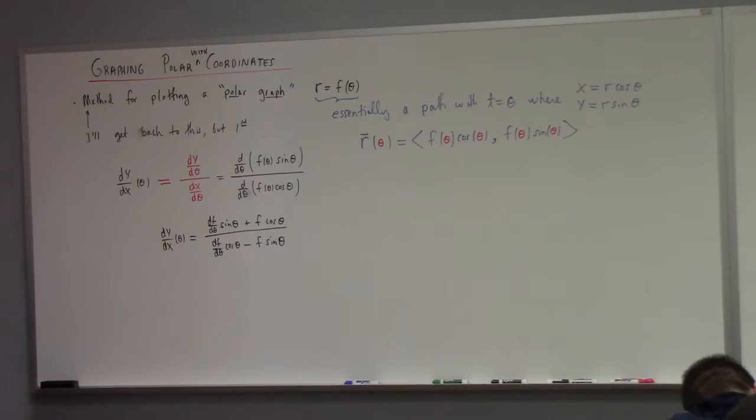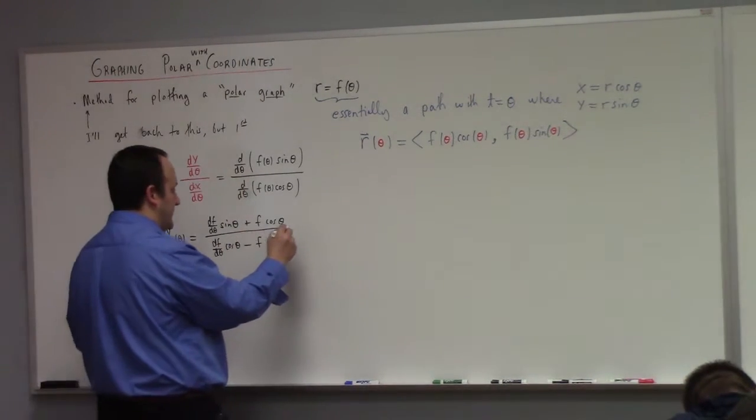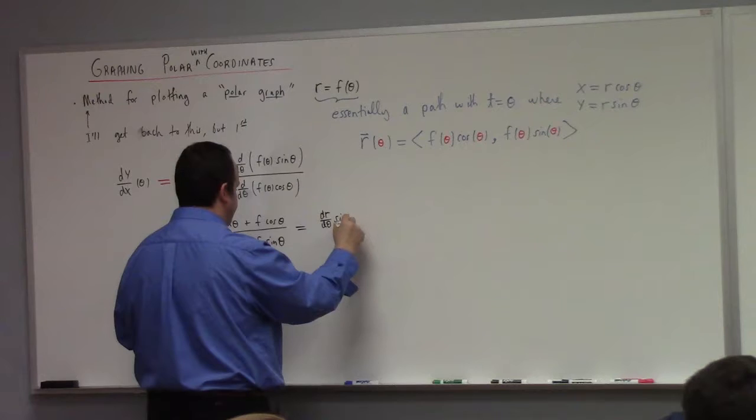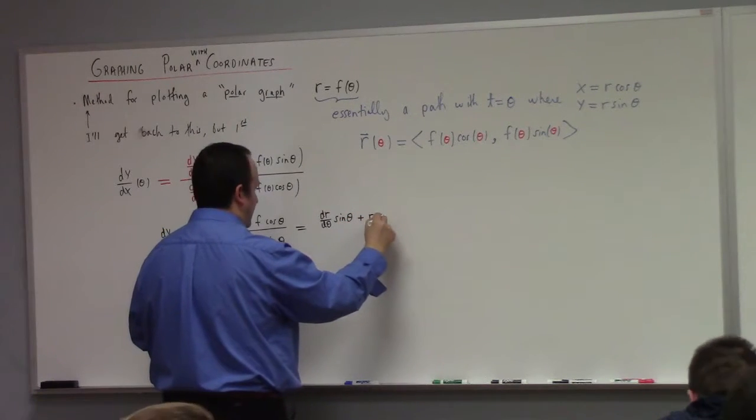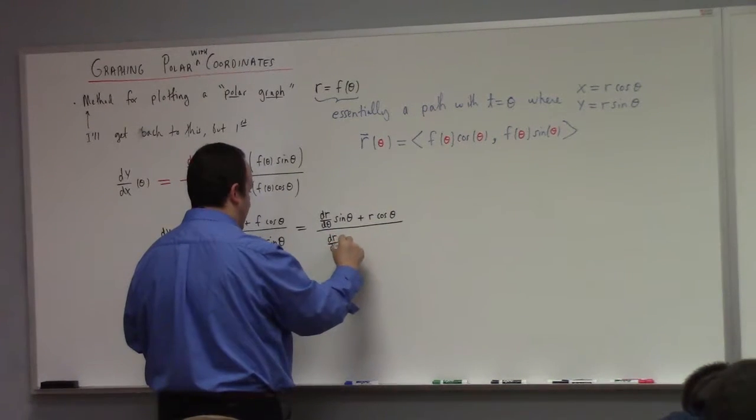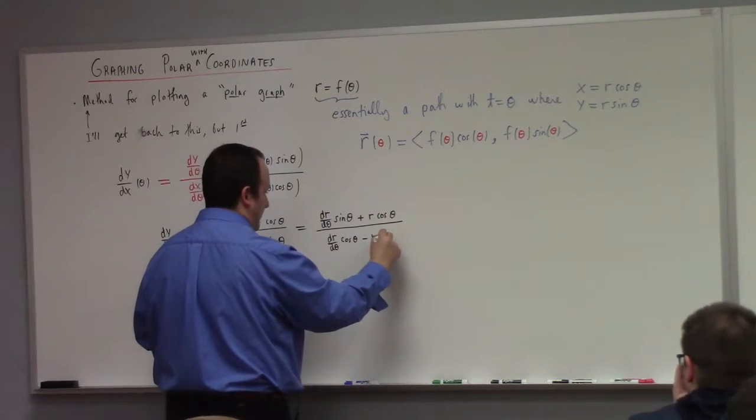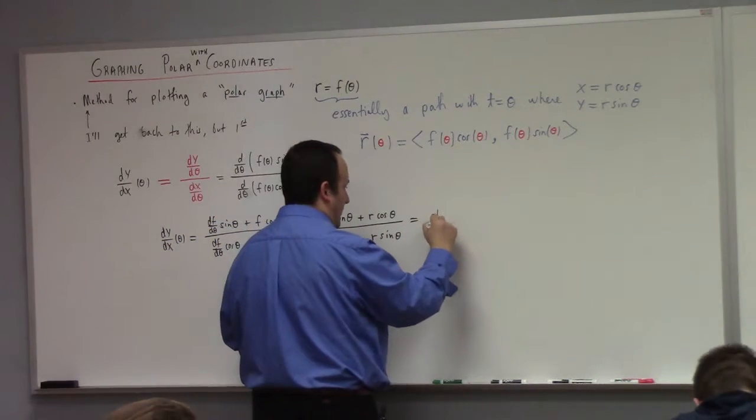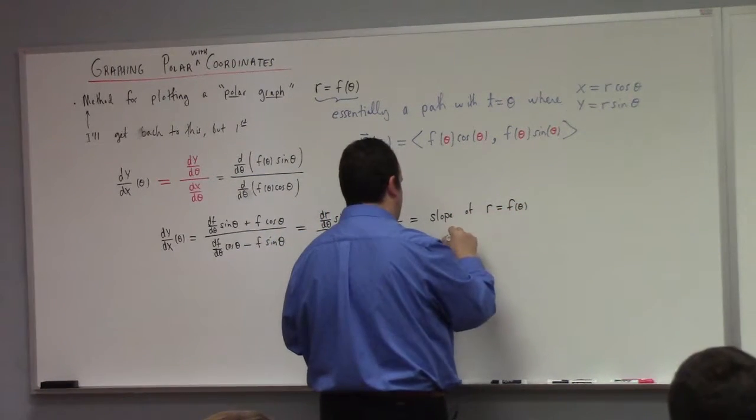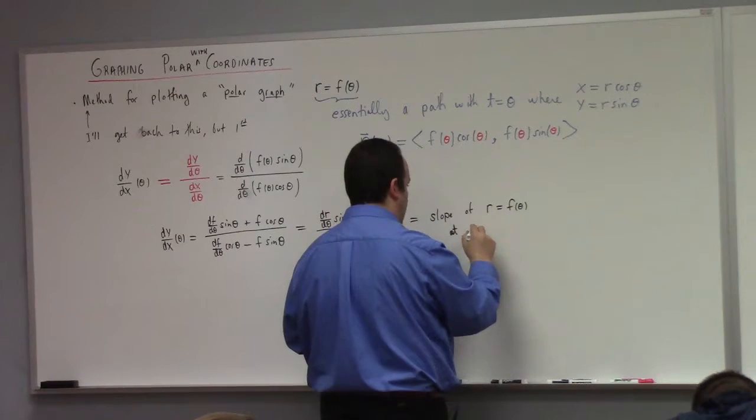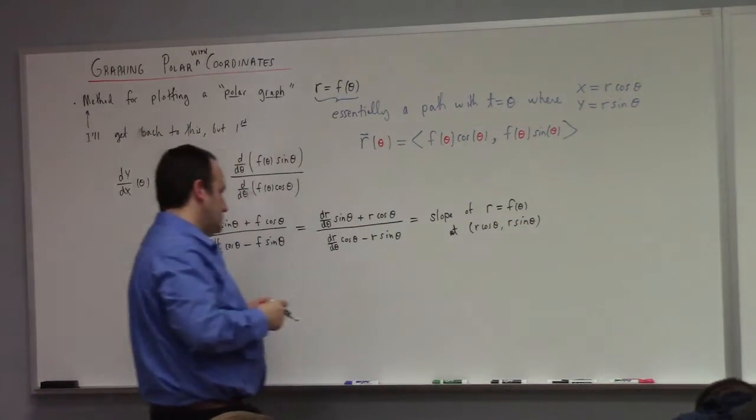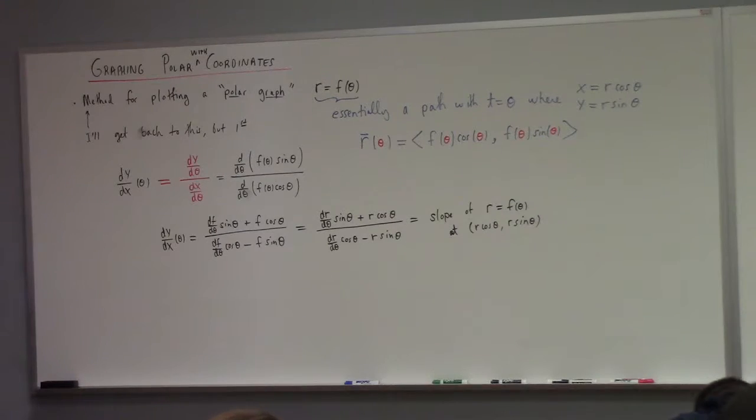Or, you could put f equals to, or if we set f equals to r, which is probably what you'd see in a textbook, right? This is dr d theta sine theta, plus r cosine theta, divided by dr d theta cosine theta, minus r sine theta. So, that would be a formula for the slope of r equals to f of theta.